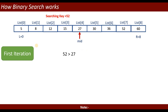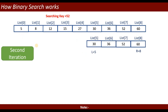52 equals 27 is not correct. Then it checks: is 52 greater than 27? Yes, that is true. In that case, the left part of the array is ignored and the right part is considered. Left becomes mid plus 1, so left moves to index 5, and right stays at index 8. This is the second iteration.